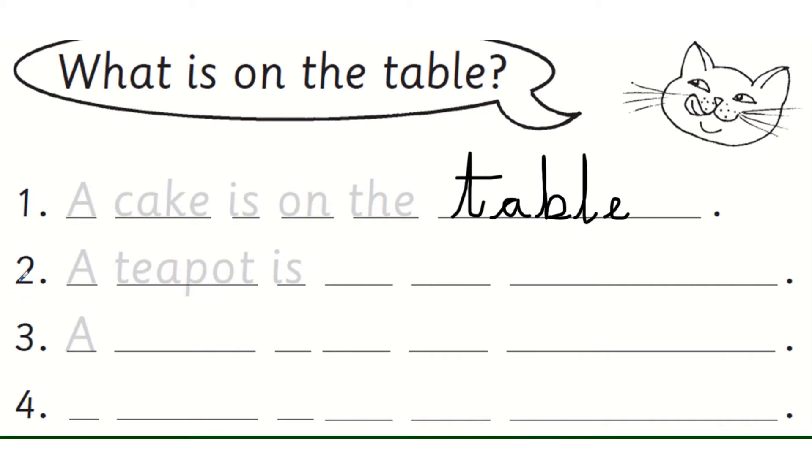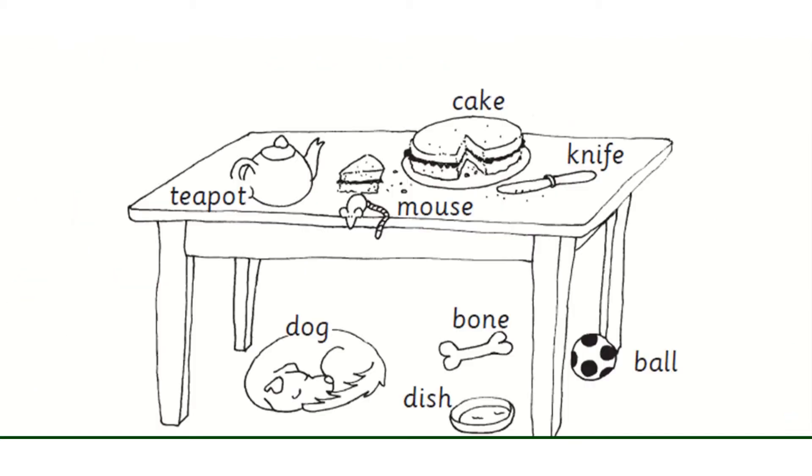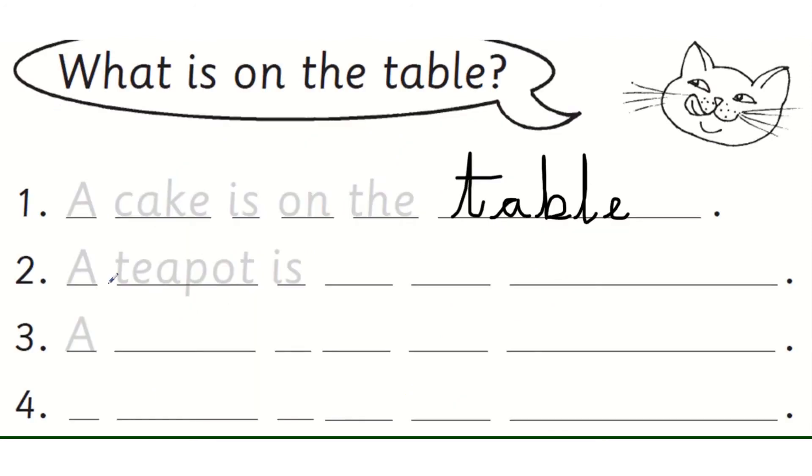The second sentence you can see and remember the pictures if you need to go back. The second sentence is about the teapot. A teapot is... Ah, I know. So they've missed out this time the word on.